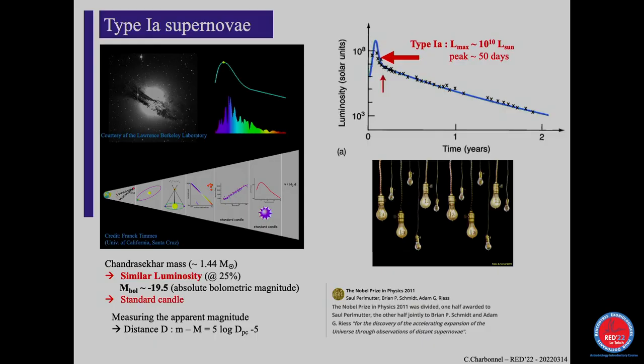This is what we call a standard candle — it's a way to determine distances in the universe. There are different ways to determine distances of stars: parallaxes, Cepheids, which are stars with oscillating luminosity discovered by Henrietta Leavitt. The further you go, the brighter the object you need to measure the distance. Type Ia supernovae are used at large distances to determine the distances of galaxies, and through the spectrum you can also determine the redshift of the galaxy — both distance and recession speed.